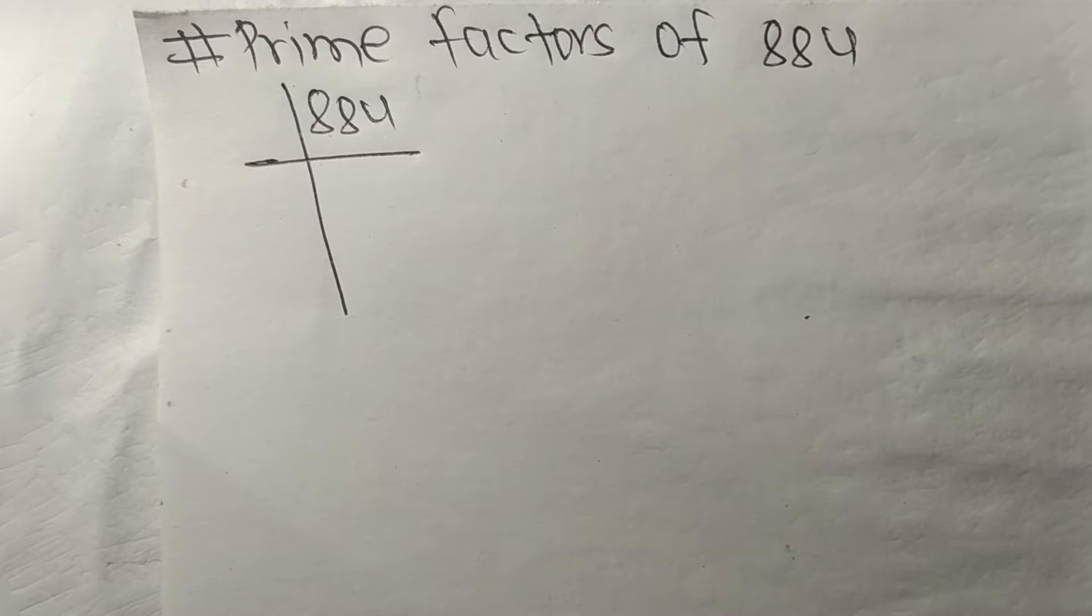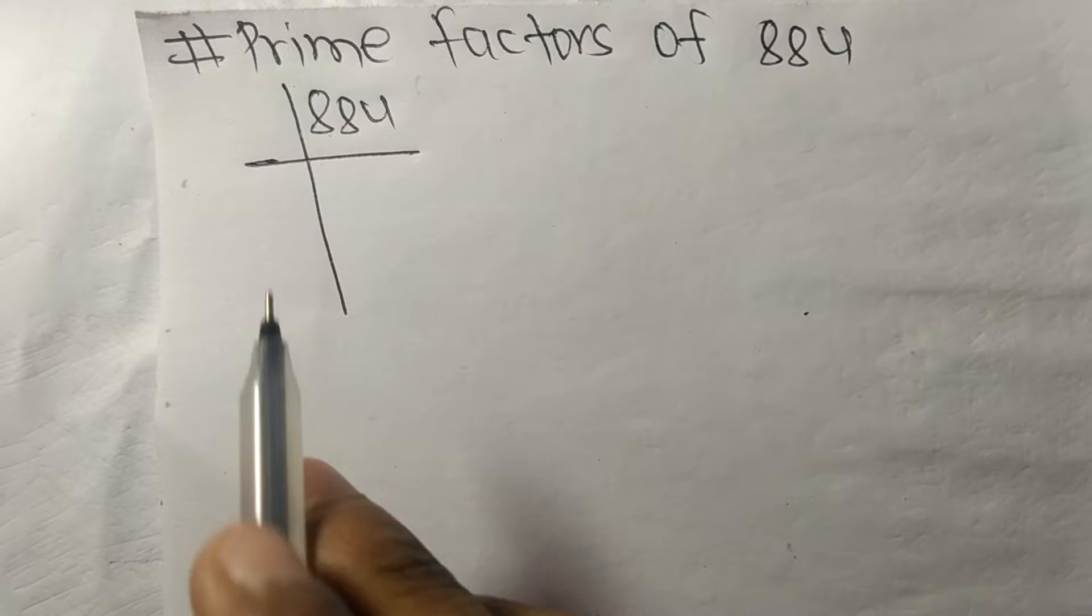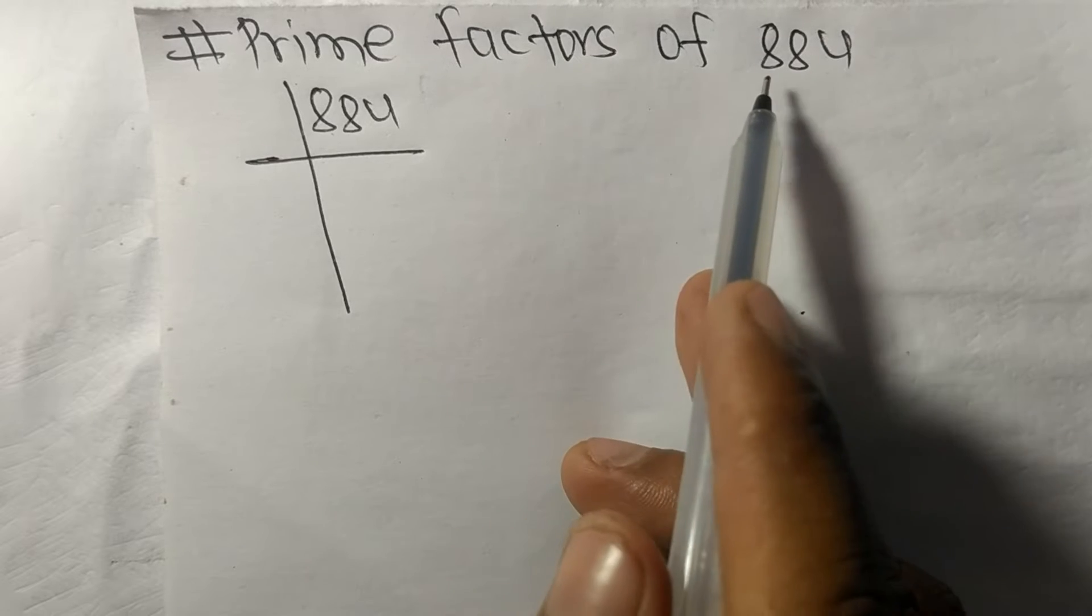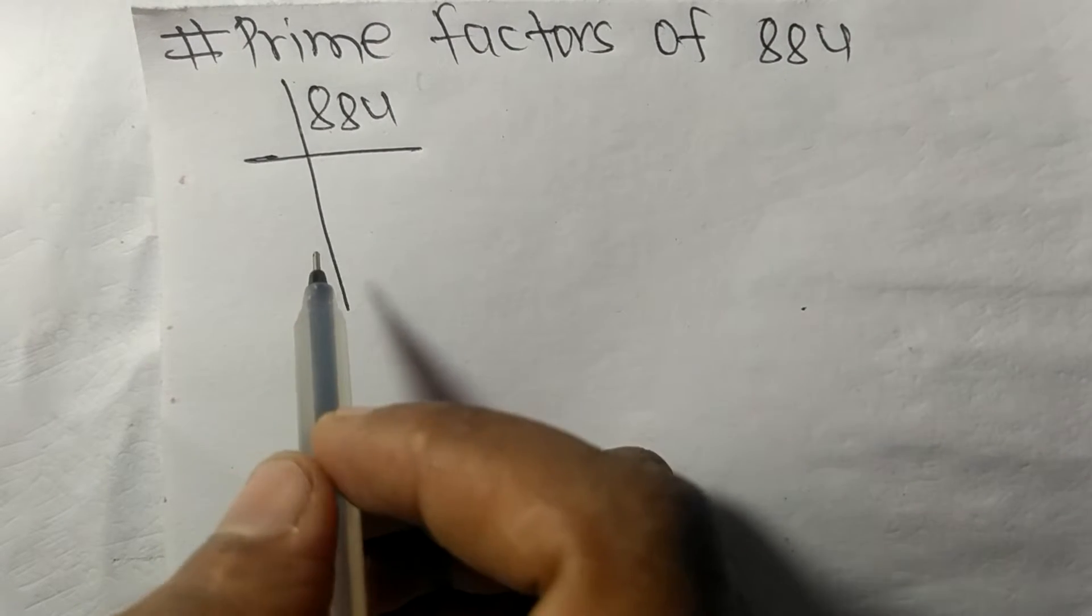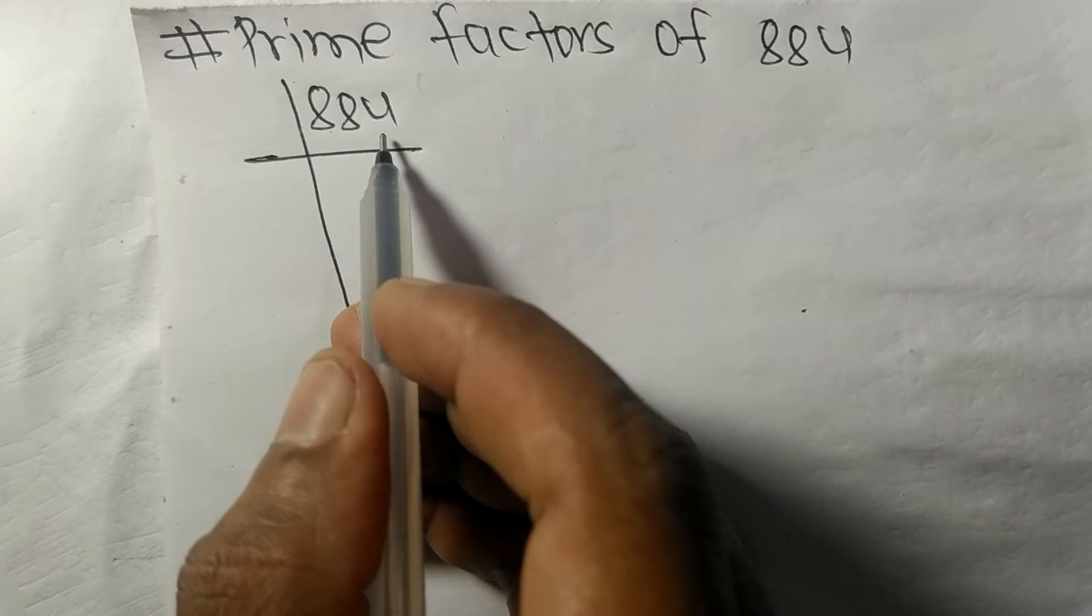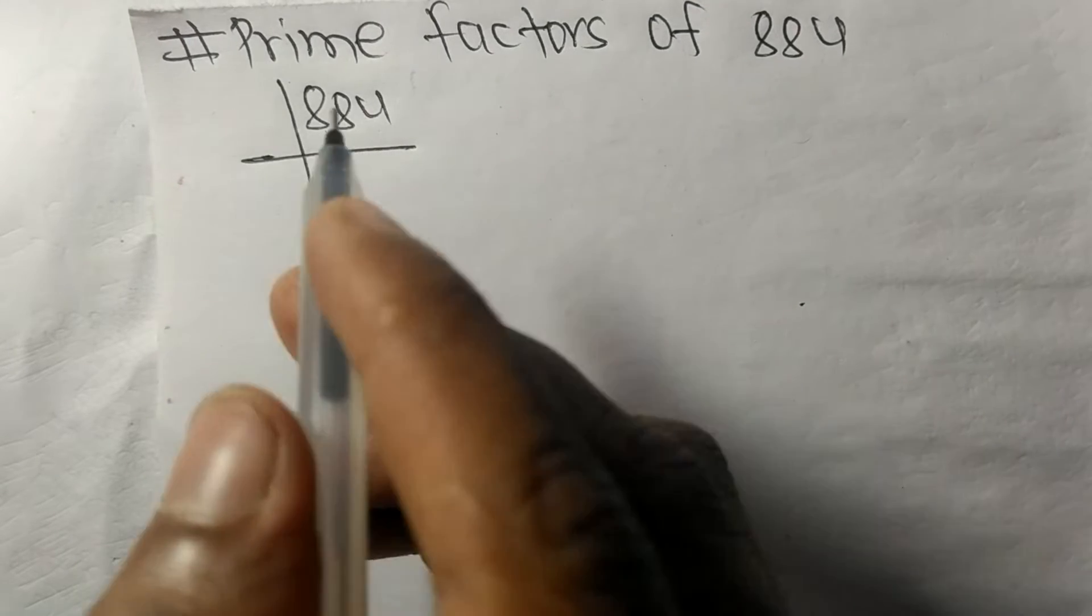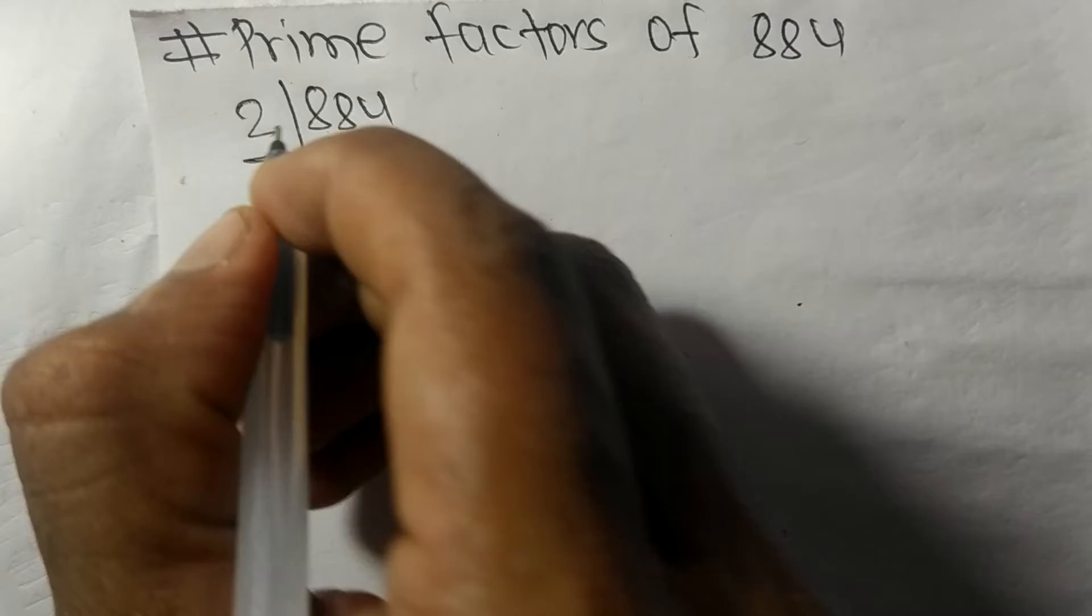Today in this video we shall learn to find the prime factors of 884. At last it contains an even number 4, so the whole number is divisible by 2.